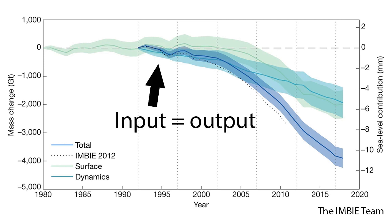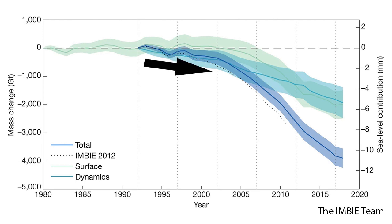Notice how early in the record, the ice sheet was in balance and had about the same input and output each year. This period had melt and calving, but any mass loss was replaced in full by snowfall during the winter. After this period, the calving rate began to increase and the ice sheet began to lose mass. Eventually, the melt rate began to accelerate too, soon exceeding the mass loss from calving. This loss contributes to sea level rise.